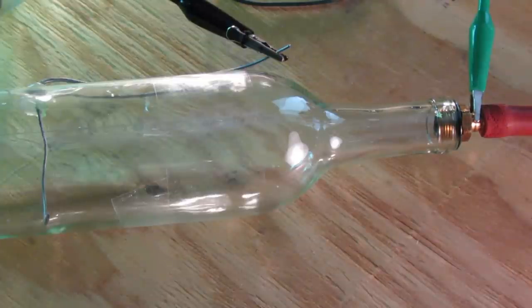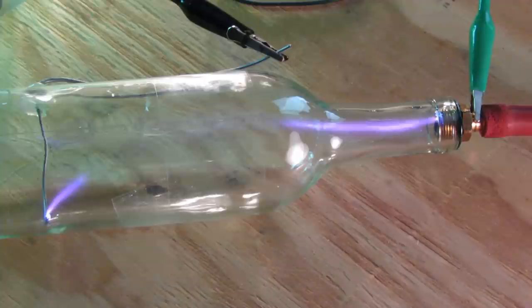Now I turn on the variac and slowly and carefully turn up the voltage. As you can see, a beam of electrons, also known as a cathode ray, appears.